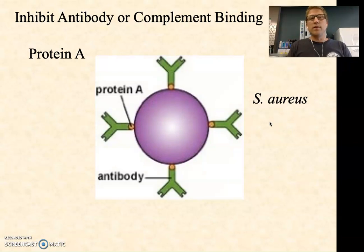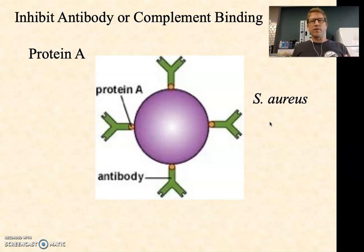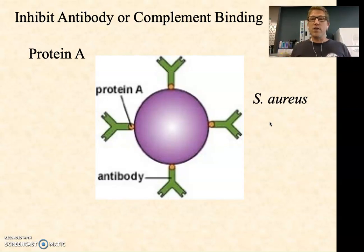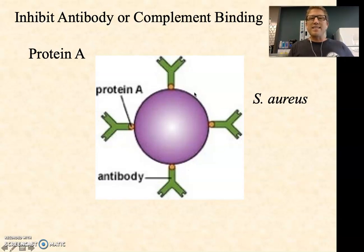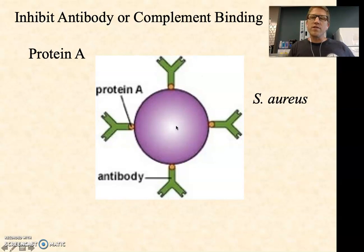Protein A is another example — in this case it's not so much hiding as interfering with the process of opsonization. To understand this, we need to think about how the immune system works. Part of our adaptive immune system includes coating bacteria or other pathogens in antibodies. Our B cells produce antibodies specific to the pathogen, and the antibodies stick to the surface. The green Y-shapes in this picture are the antibodies, and it's the two forks that should be bound to antigens on the surface of, in this case, Staph aureus.